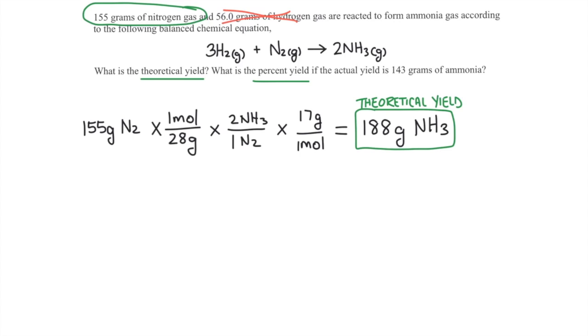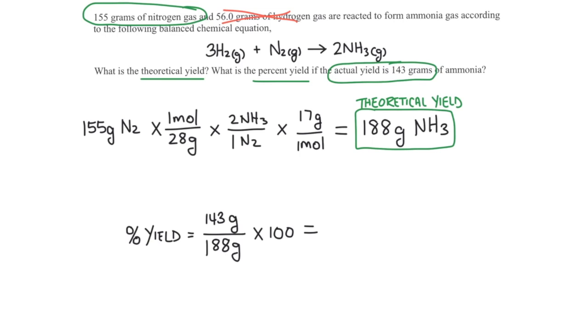Now we can determine the percent yield by taking the actual yield of 143 grams and dividing by the theoretical yield of 188 grams, then multiplying by 100, to give a percent yield of 76%.